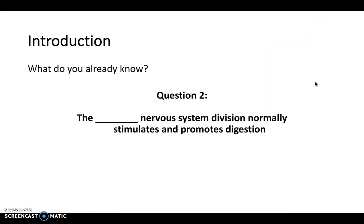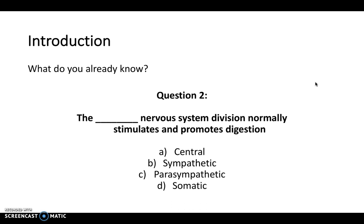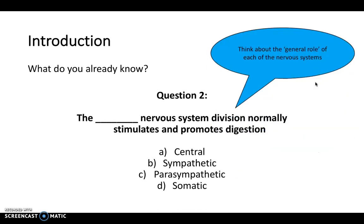Question two: which nervous system division normally stimulates and promotes digestion? Is it the central, sympathetic, parasympathetic, or somatic? Think about your different types of nervous system and what the general role of each one is. The answer is the parasympathetic nervous system, because it's all about resting and digesting, whereas your sympathetic nervous system is all about the fight or flight response.